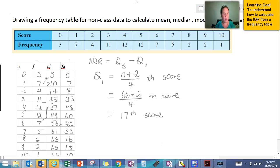So the 17th score here, we're going to use our cumulative frequency column. So 17 is greater than 14, so therefore it's after 2, but it's less than 25. So that means that our Q1, or lower quartile, must be at number 3. So we can say therefore Q1 equals 3.